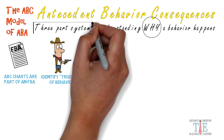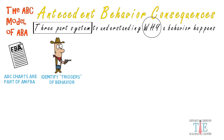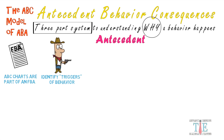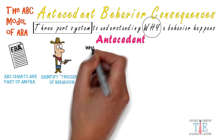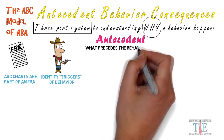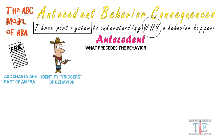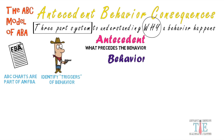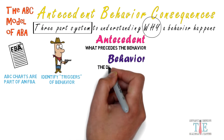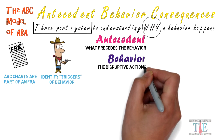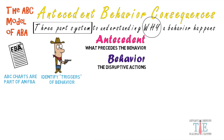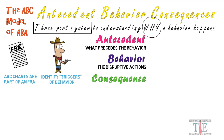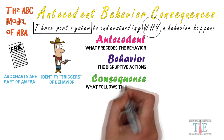The ABC model is described as a three-part system. The first part, the A, stands for the antecedent — what precedes or comes before the behavior. Next is the behavior itself, which should be a disruptive action being studied. And the third part is the consequence — what directly follows the behavior.